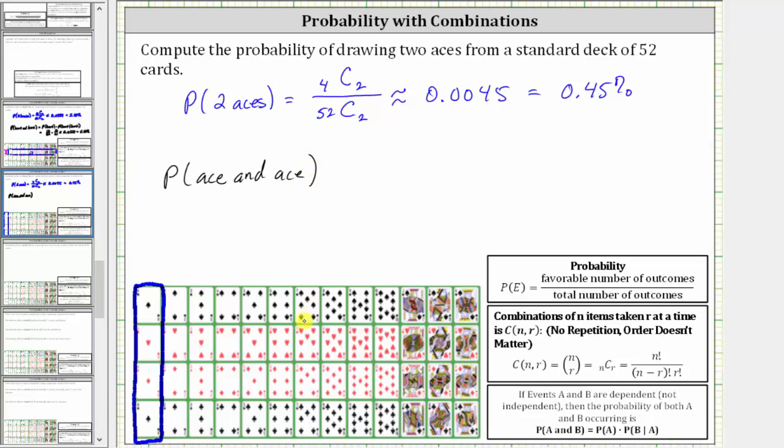Because we don't have replacement, these two events are dependent, and therefore the probability of an ace and an ace is equal to the probability of drawing an ace times the probability of drawing an ace given an ace has already been drawn.